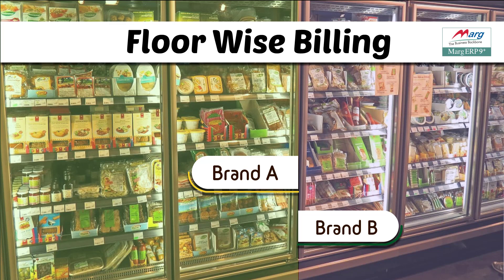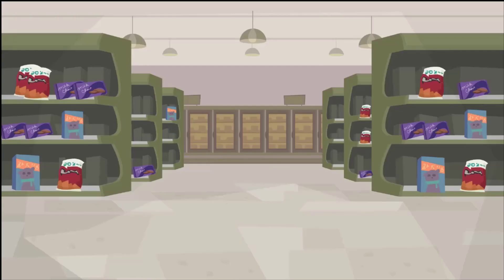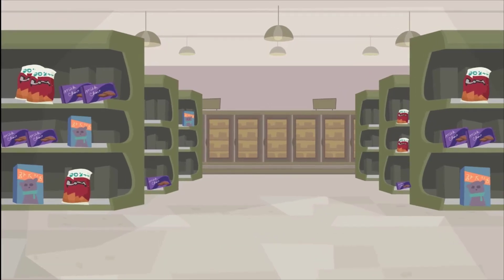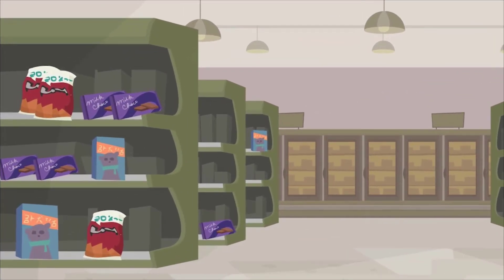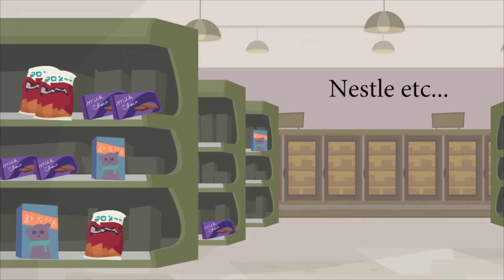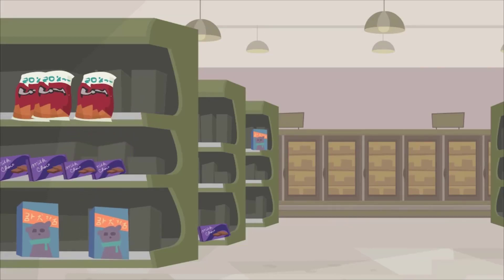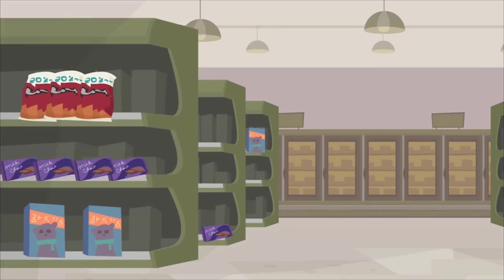Hello friends, today in this video we will see the process of floor wise billing, but before that we will understand how floor wise billing is beneficial for your business. If you deal in products of multiple brands like FMCG, then products of companies like Cadbury, Parley, Nestle etc. will be available to you. Suppose you have maintained different sections for these products on the same floor or on multiple floors in your store, like a separate section for Nestle and a separate section for Cadbury.